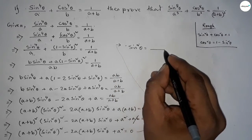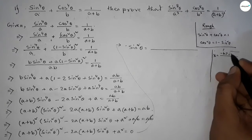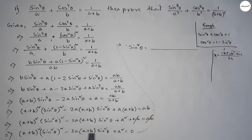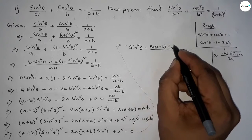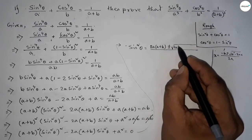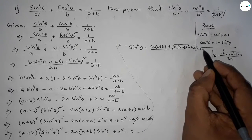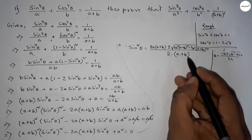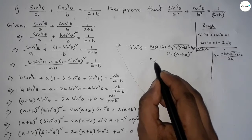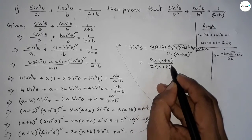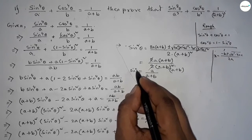Now we can find sin²θ using the Sridhar Acharya formula: x = (−b ± √(b² − 4ac)) / 2a. Here b = −2a(a+b), so applying the formula: sin²θ = [2a(a+b) ± √(4a²(a+b)² − 4(a+b)²·a²)] / [2(a+b)²]. The discriminant simplifies to zero, so we cancel terms and get sin²θ = a/(a+b).